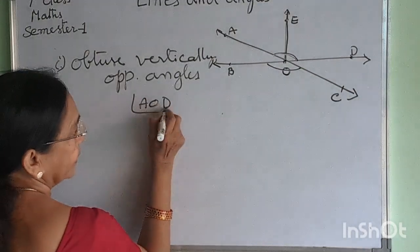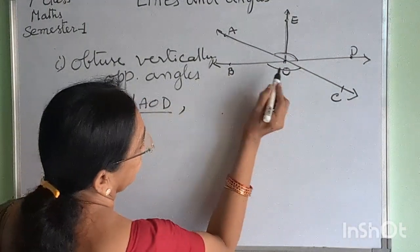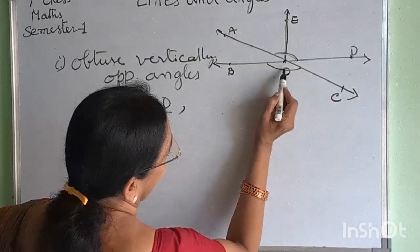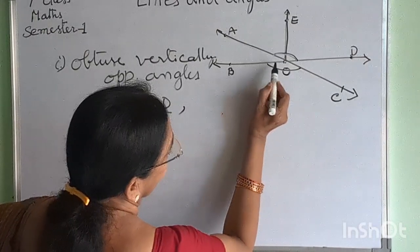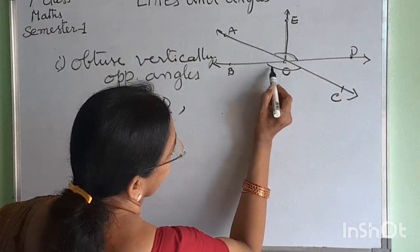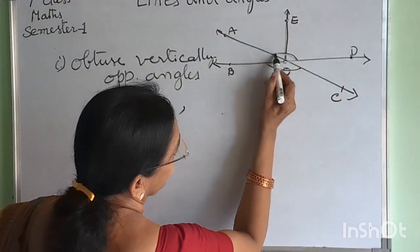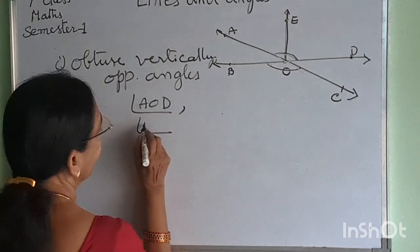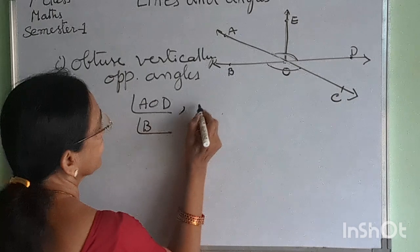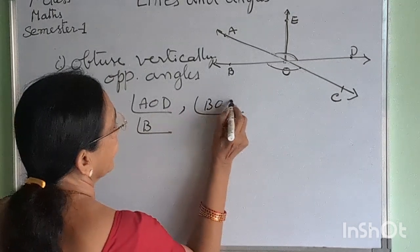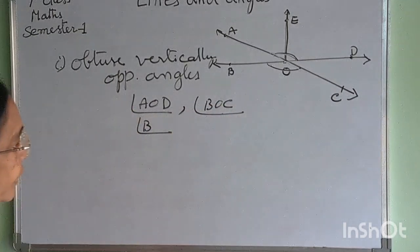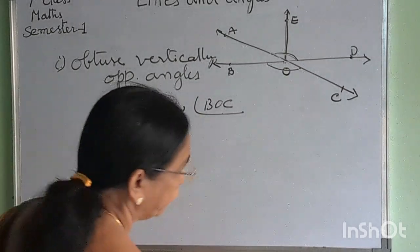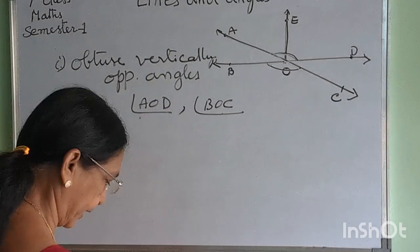Angle AOD and the corresponding obtuse vertically opposite angles — angle AOD and angle COB are obtuse vertically opposite angles.